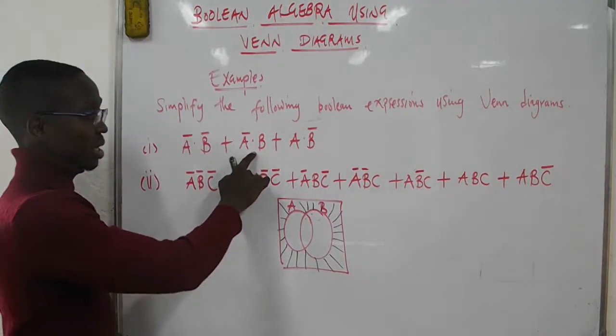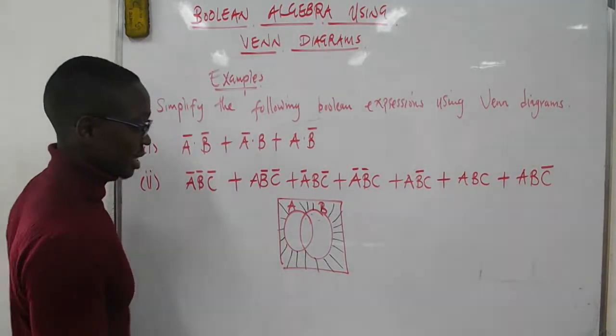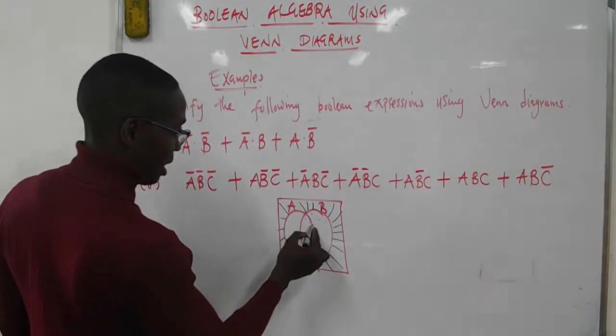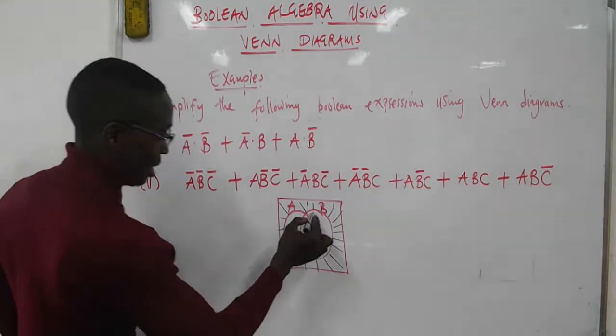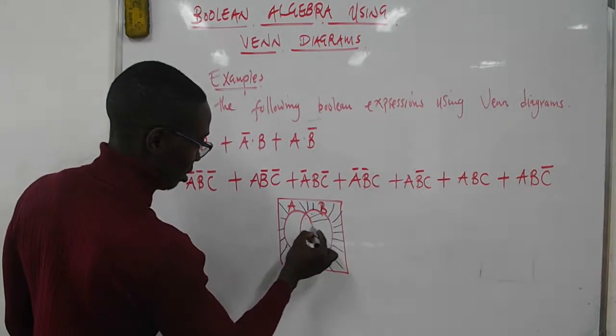Then we have A̅B, which is outside set A but inside B - this region here.